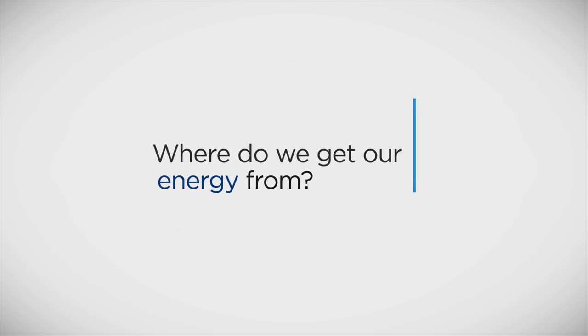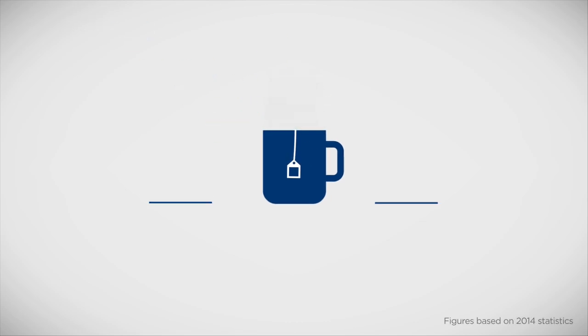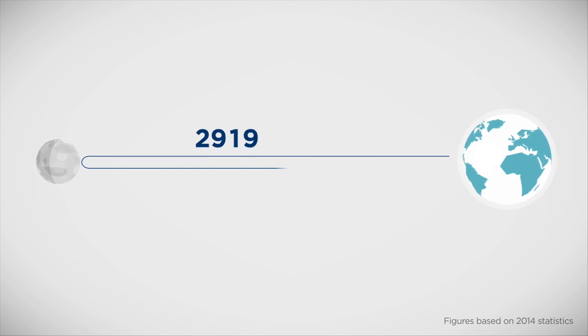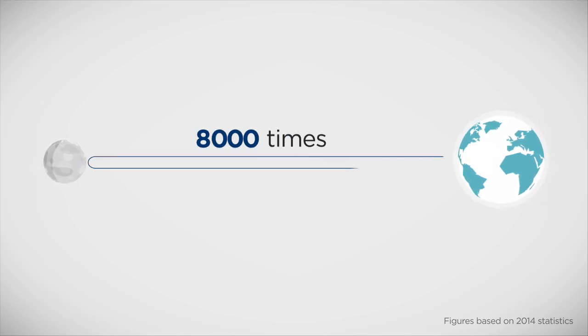Where do we get our energy from? In one year, the UK uses the same amount of energy as it takes to make over 90 trillion mugs of tea. If you line them all up next to each other, it's enough to go from the earth to the moon and back more than 8,000 times.